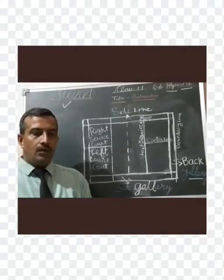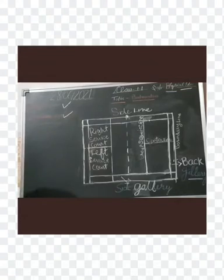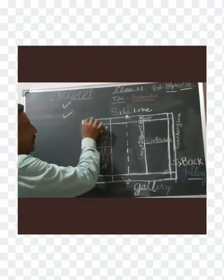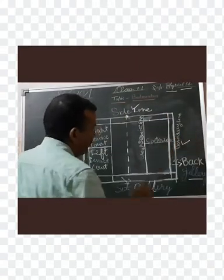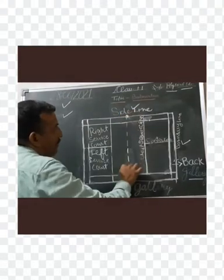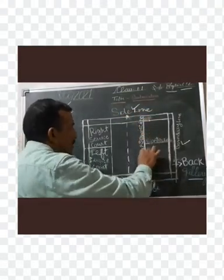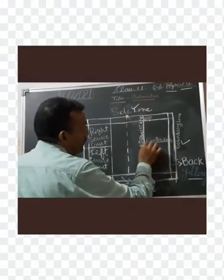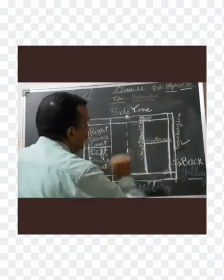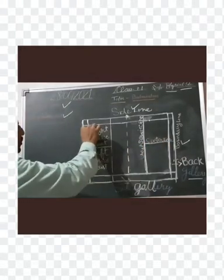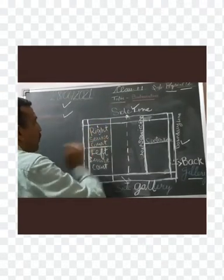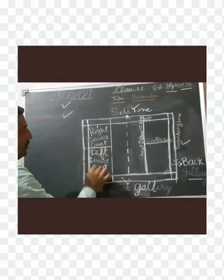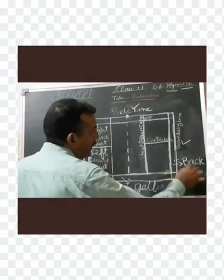Now we will discuss the badminton court. First, this line is the sideline, this line is the boundary line, this is the center line. This line is known as the short service line, and this line is the center line. This line divides two equal parts: first is the right service court, second is the left service court. And this is the back gallery and this is the side gallery.